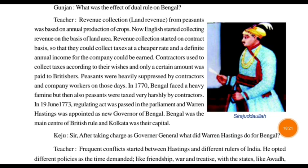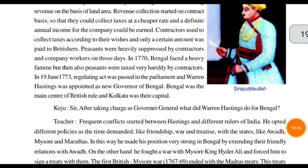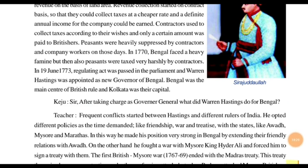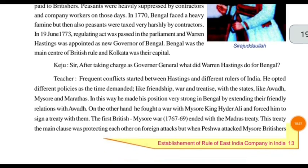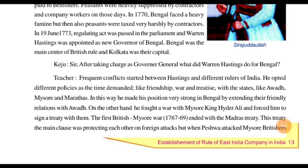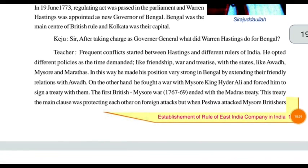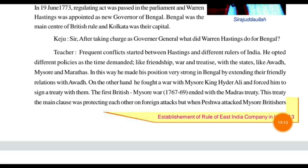The new governor came to look after all of Bengal. Bengal was the main center of British rule and Kolkata was its capital — the British were ruling mainly from Bengal because all other states came under it. After taking charge, Warren Hastings faced frequent conflicts between himself and the different rulers of India. He opted for different policies as the time demanded, bringing new policies to solve the problems there.